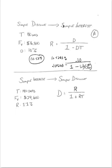Let's look at part B. So part B, we're taking a simple interest and converting it to a simple discount.